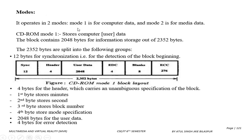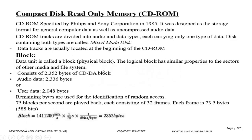There are Mode 1 and Mode 2. Mode 1 is for computer data, Mode 2 is for media data such as audio or video. CD-ROM Mode 1 stores computer data; the block contains 2048 bytes for information storage out of 2352 bytes, as we have seen.